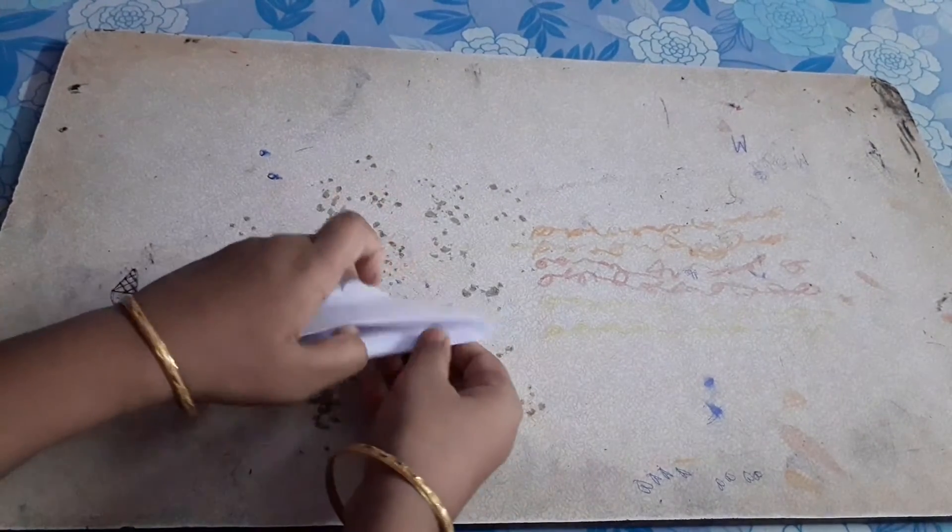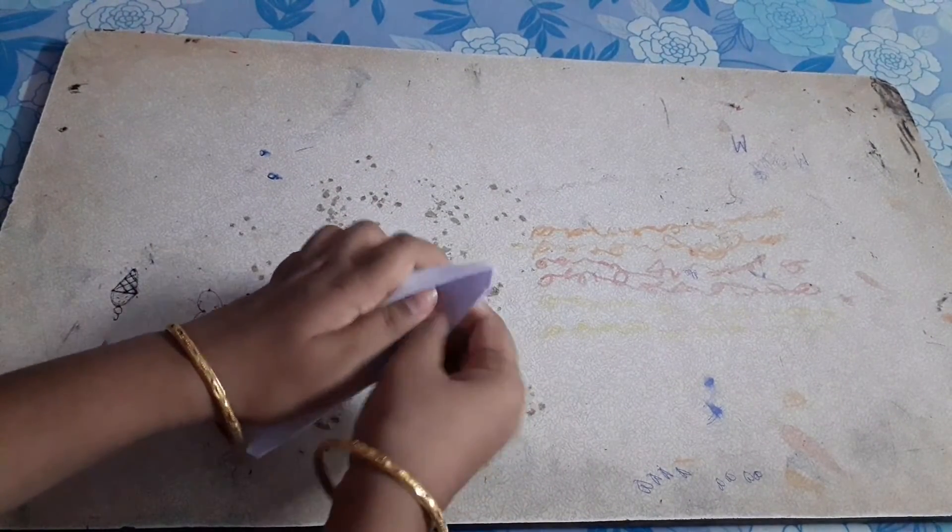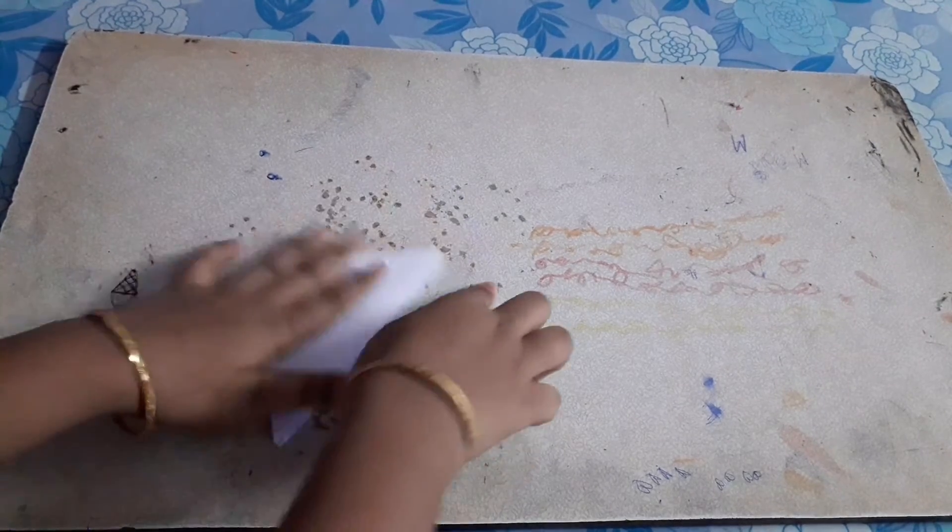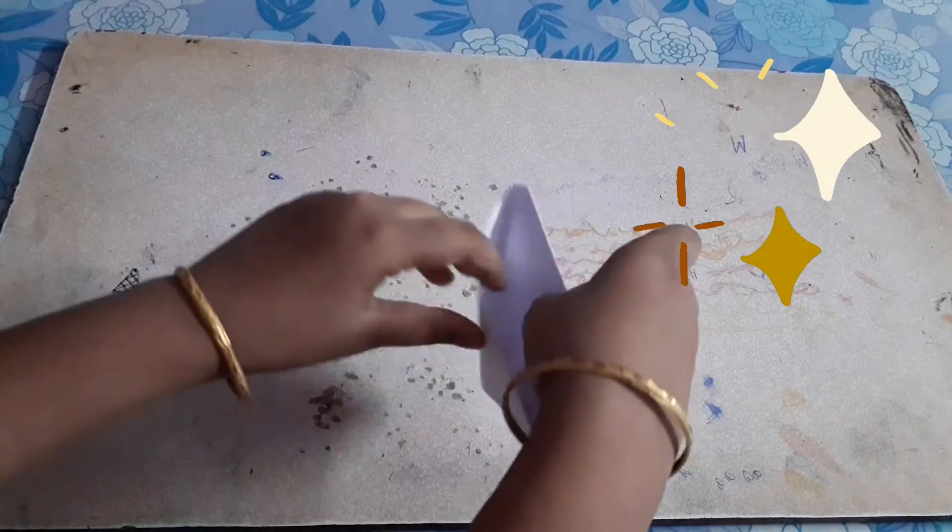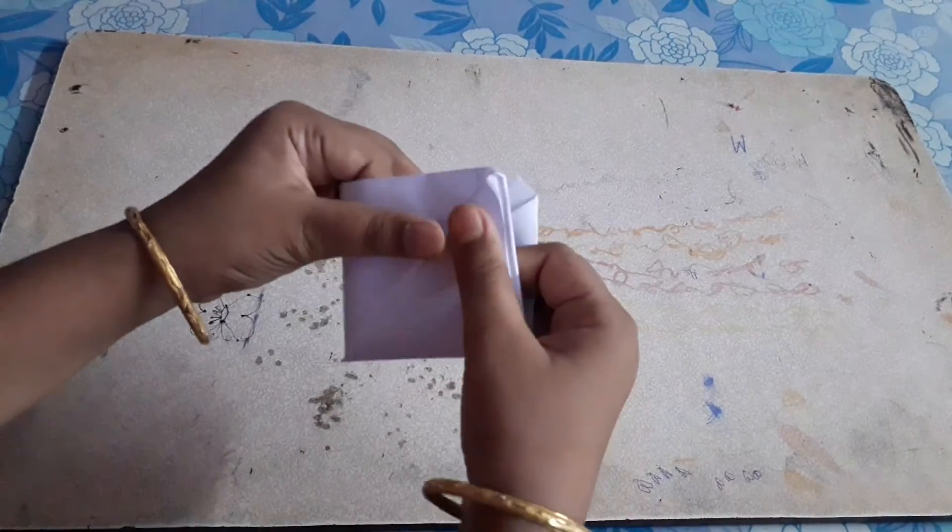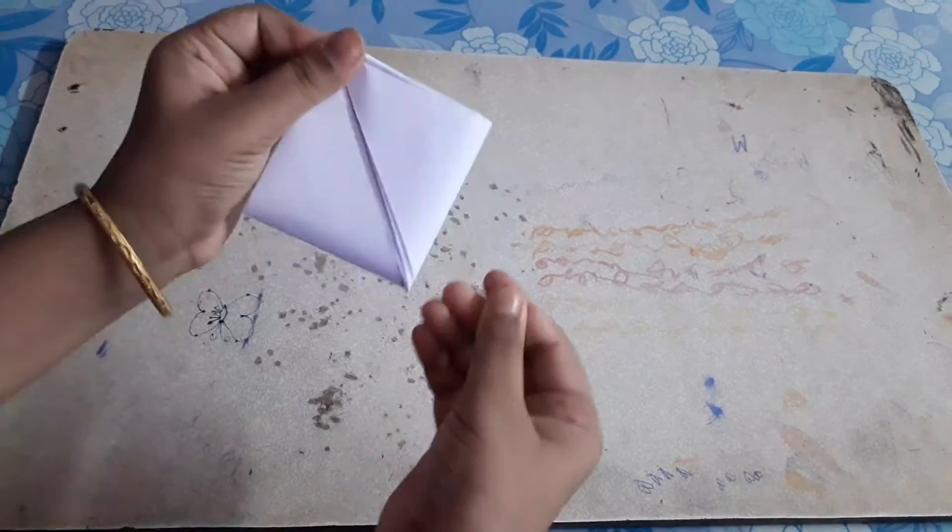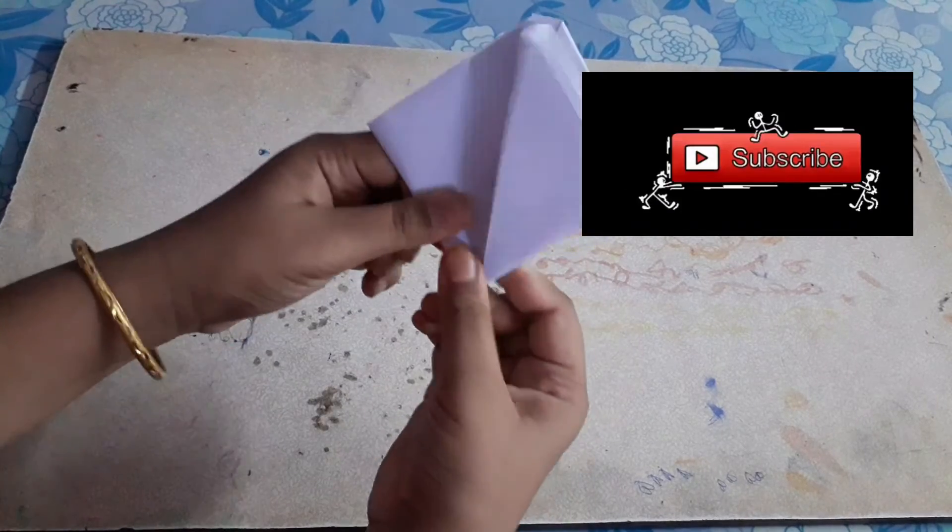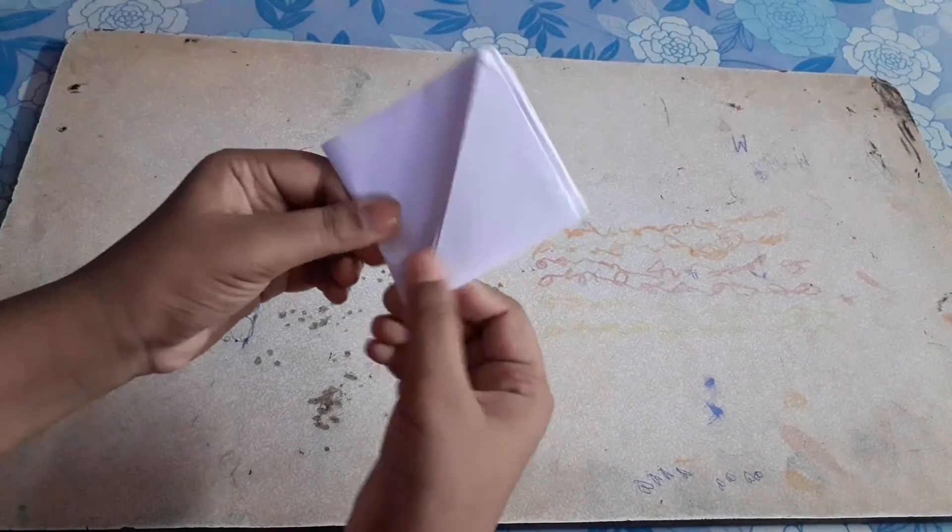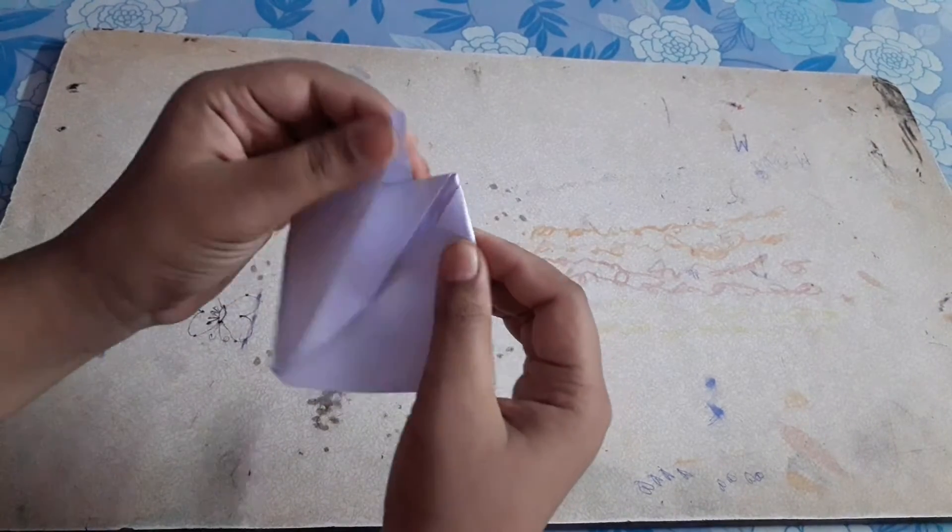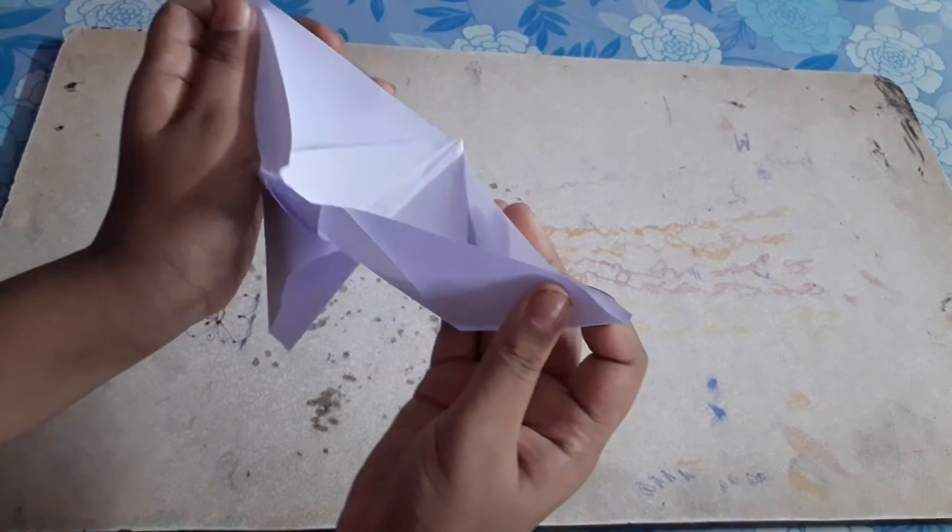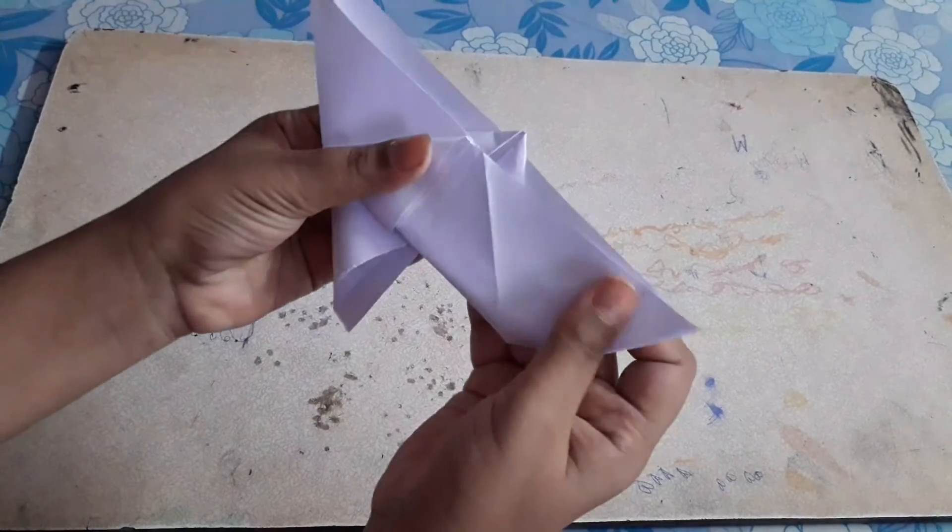So make sure it is all settled. Next, keep the fingers in the middle and fold it upwards so it's like a diamond. Turn aside and now take this flaps and fold it.